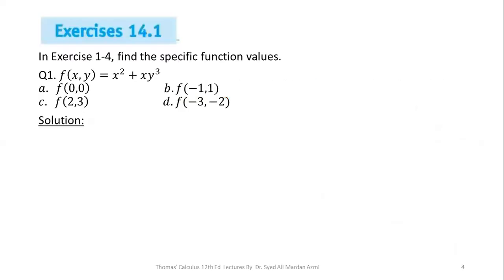Now we can move on to exercise 14.1. In exercise 14.1, questions number one to four have the statement: find the specific function values. We have to calculate values of these functions for particular values. If a function depends on two variables, then these two variables will collectively form an ordered pair.